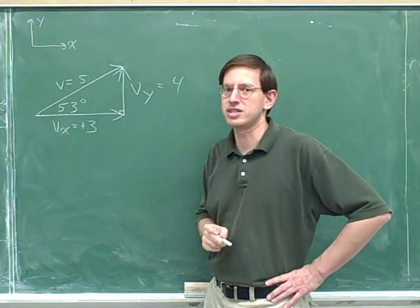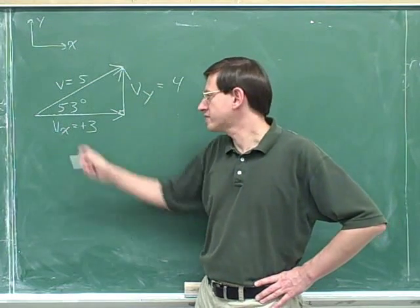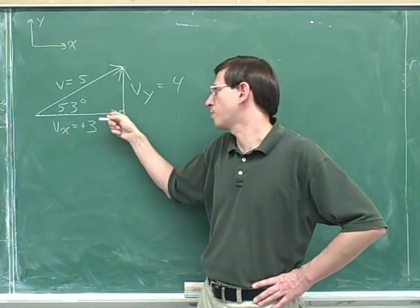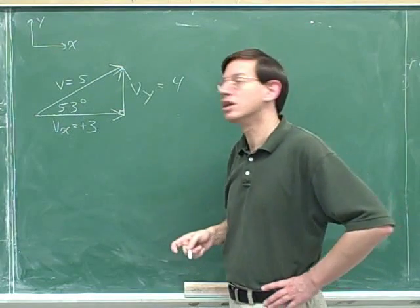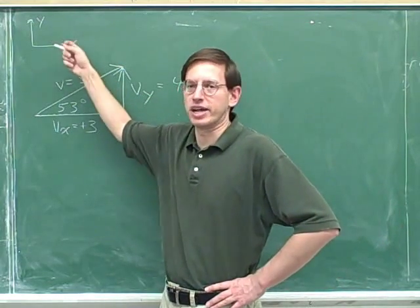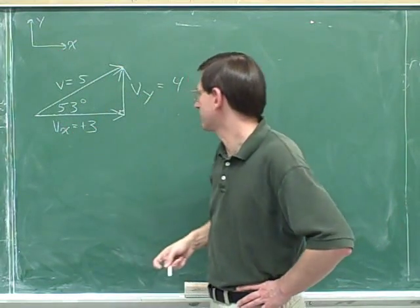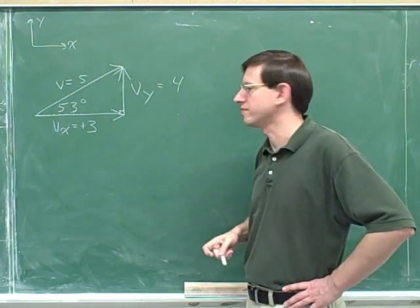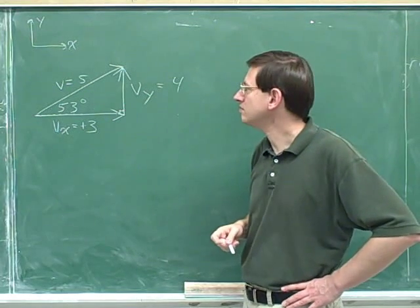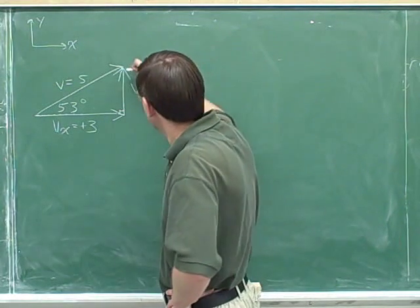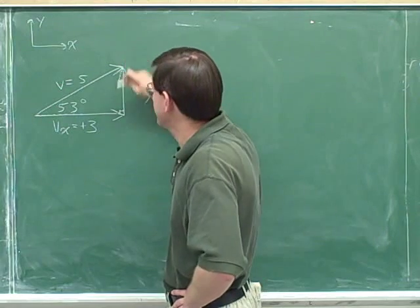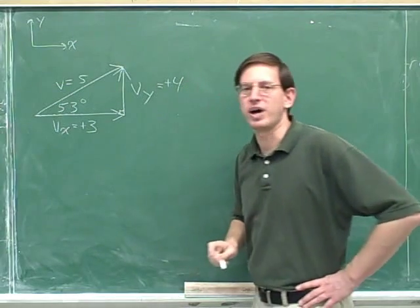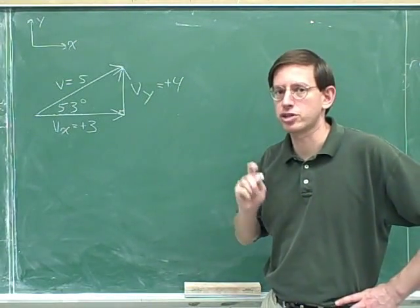This is a very important point. It might seem trivial but it's crucial. V sub x is not 3 — it's positive 3, because this component is pointing to the right and we chose right as our positive direction. We don't have to choose right as our positive direction, but if we do, then this has to be positive 3. Now, pause for a second and determine the sign on V sub y.